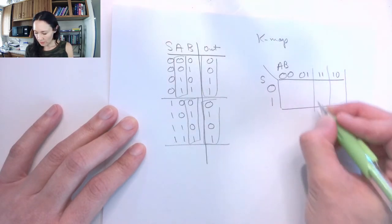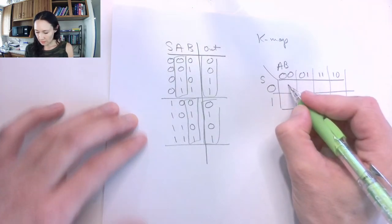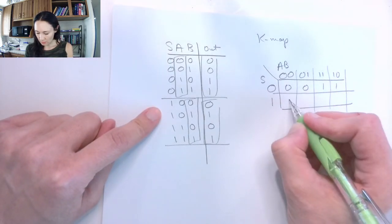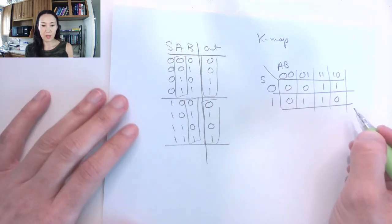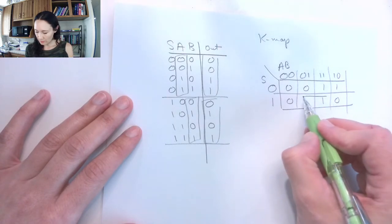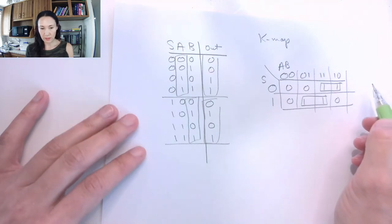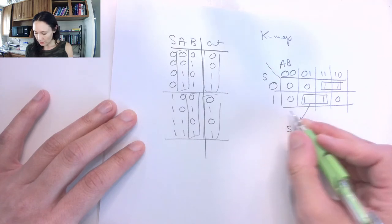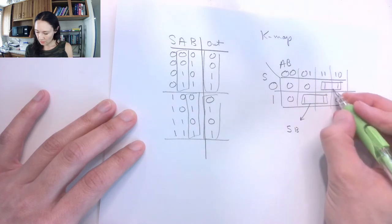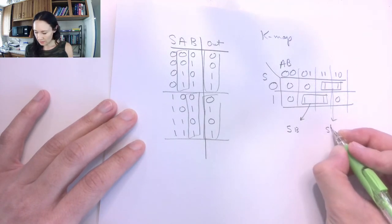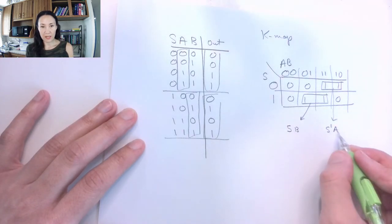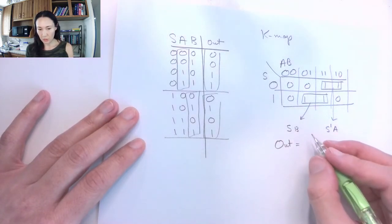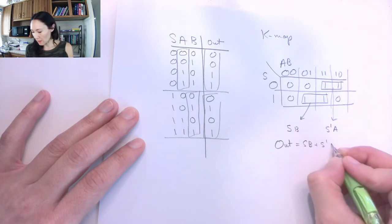We can fill in the values for out. Reading from the truth table, the values are 0, 0, 1, 1 for s=0 and 0, 1, 1, 0 for s=1. We can then make our groupings: I group these ones and these ones. The first grouping gives me s=1 and b=1; the second grouping gives me s=0 and a=1. So if either of these conditions holds, I get a 1 on my output. The Boolean function for the 2-to-1 multiplexer is sb + s̄a.